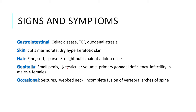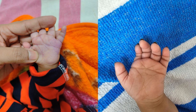In the skin, there is cutis marmorata and dry hyperkeratotic skin. The hair is fine, soft, sparse, and there is straight pubic hair at adolescence. In the genitalia, there is small penis with decreased testicular volume, possible primary gonadal deficiency, and almost all males are infertile, although fertility has been documented in some females. Occasional features include seizures, webbed neck, and incomplete fusion of vertebral arches of the spine. The single transverse palmar crease is highly specific for Down syndrome.